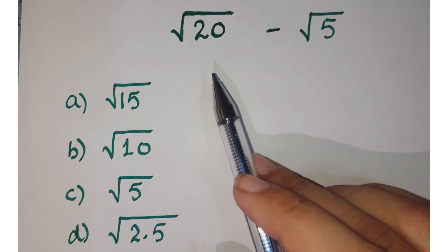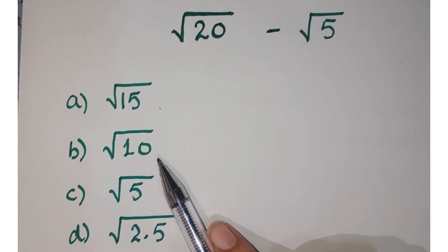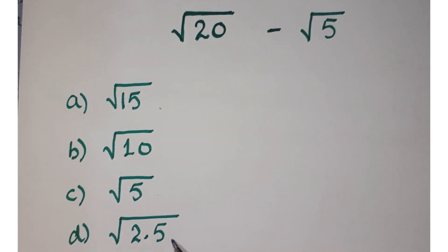The question is square root of 20 minus square root of 5, and we have four options: square root of 15, square root of 10, square root of 5, and square root of 2.5.